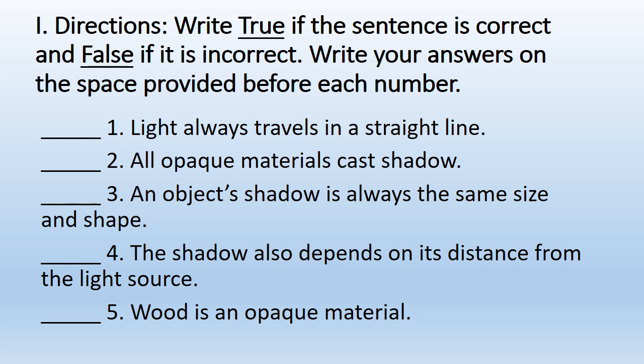Number one: light always travels in a straight line — true or false? Number two: all opaque materials cast a shadow — true or false? Number three: an object's shadow is always the same size and shape — true or false? Number four: the shadow also depends on its distance from the light source — true or false? Number five: wood is an opaque material — true or false?